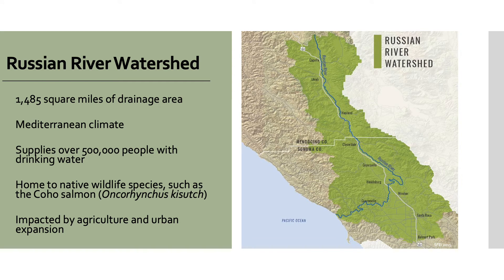A large portion of Sonoma County falls within the Russian River watershed, which encompasses about 1,500 square miles of drainage area. It is characterized as a Mediterranean climate with warm summers and mild wet winters. The watershed is of local importance as it supplies over half a million people with drinking water. Additionally, it is home to native wildlife species such as the coho salmon, which is listed as federally endangered.